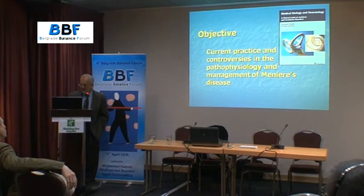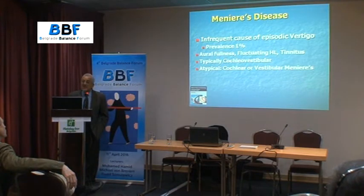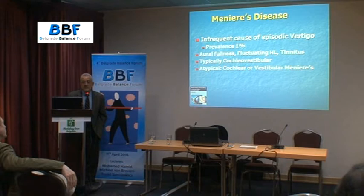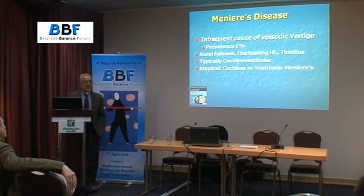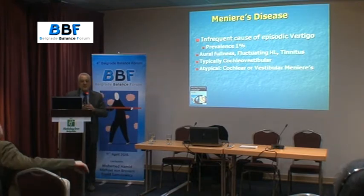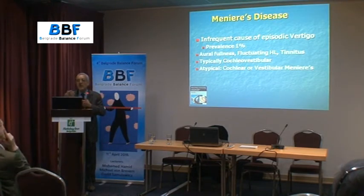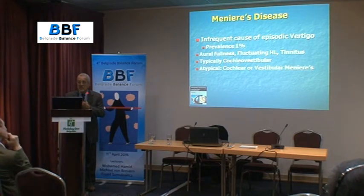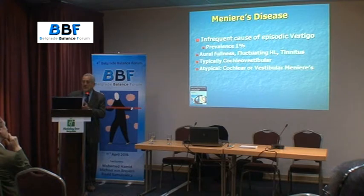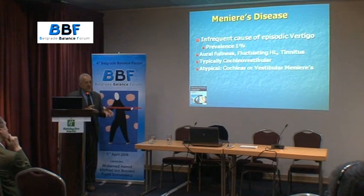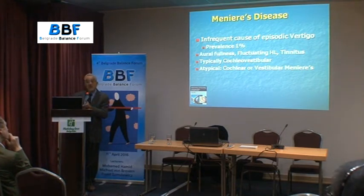All of us see Meniere's disease. It's an infrequent cause of vertigo. It's not the common pathophysiologic cause coming from the ear. Vestibular neuronitis and vestibular migraine are much more common. We all know the main symptoms are fullness in the ear, fluctuating hearing loss, tinnitus, as well as episodic vertigo. There is the typical picture of Meniere's, and also the atypical picture — people can present with cochlear symptoms only or vestibular symptoms only.